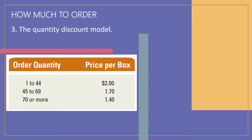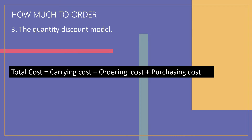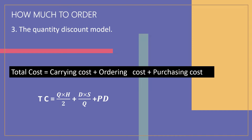The buyer's goal with quantity discounts is to select the order quantity that will minimize total cost, where total cost is the sum of carrying cost, ordering cost, and purchasing cost. Thus, TC equals Q multiplied by H divided by 2, plus D multiplied by S divided by Q, plus P multiplied by D, where P is the unit price.